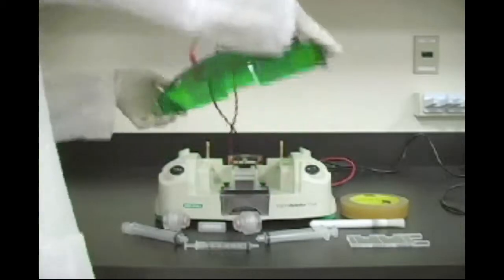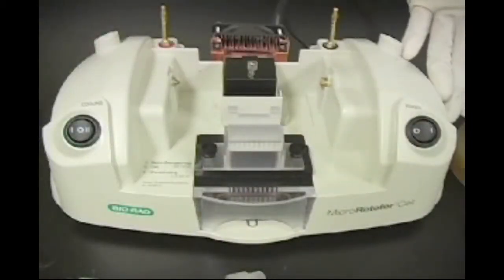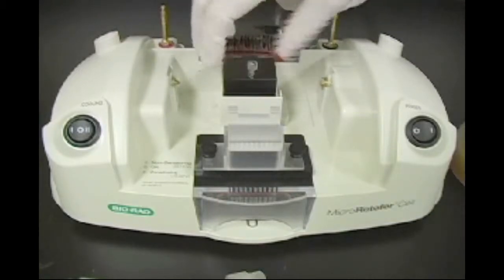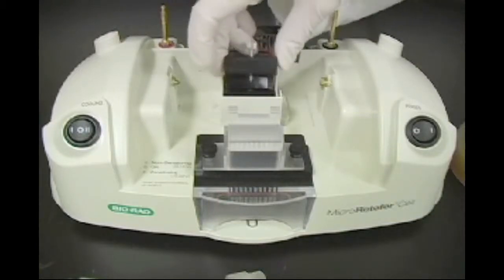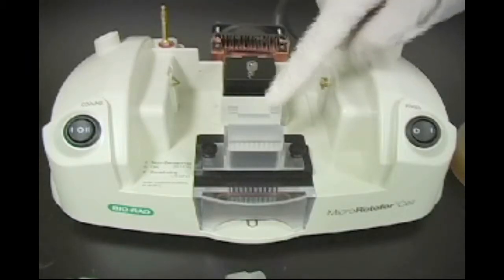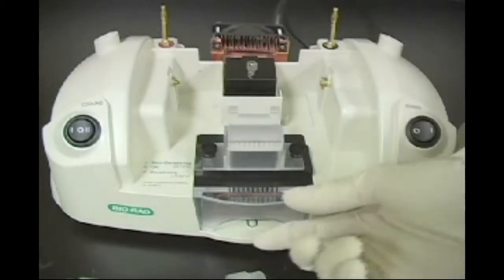The Micro Rotifor cell contains a number of components. The chassis is the base of the cell and houses the focusing station, which is used during separation, and the harvesting station, which collects fractions from the focusing chamber after fractionation is complete.